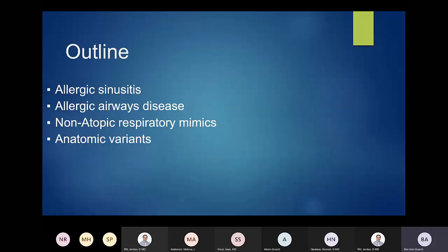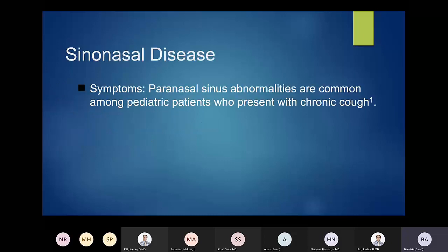We'll talk about imaging and pediatric allergy. A decent amount of it is also mimics to allergy as well — not necessarily things you would have to deal with on your own, but important things to consider that can make the diagnosis difficult. We'll talk about allergic sinusitis, some of the airway diseases, some respiratory mimics, and some anatomic variants, mainly vascular anomalies that can simulate these symptoms.